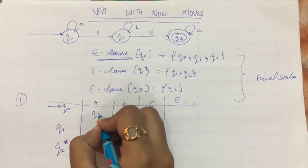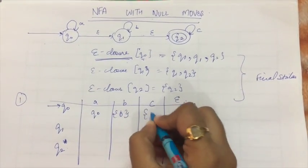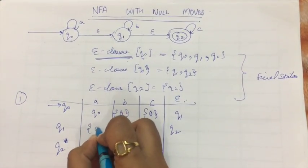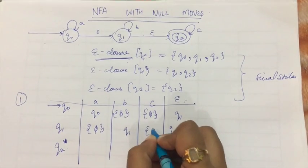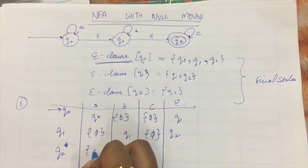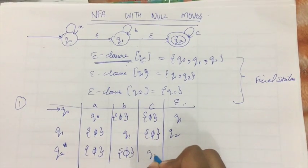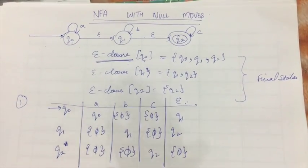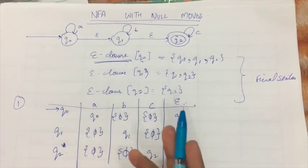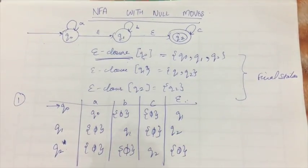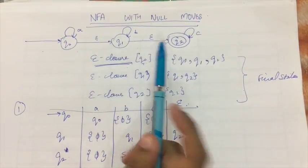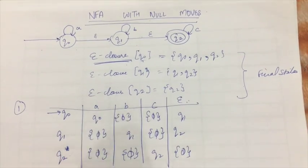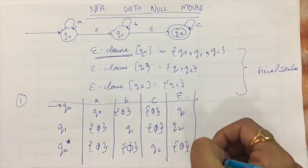So we have states Q0, Q1, and Q2. In the question, you may be given this transition table and asked to convert it into an NFA without null moves. In that case, you have to make the transition diagram as well, because only then will you get full marks. So we have made the transition diagram for the given NFA.